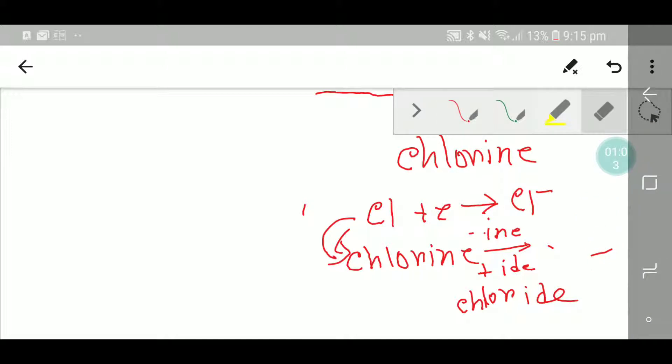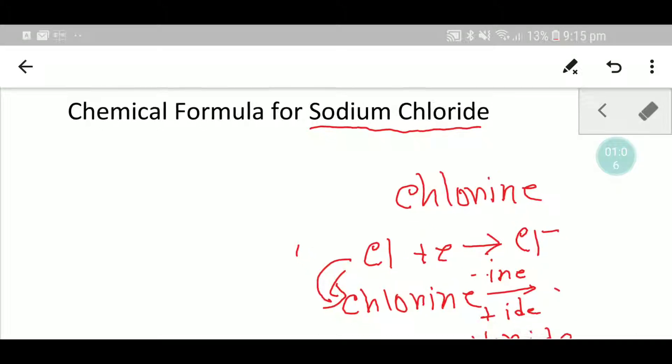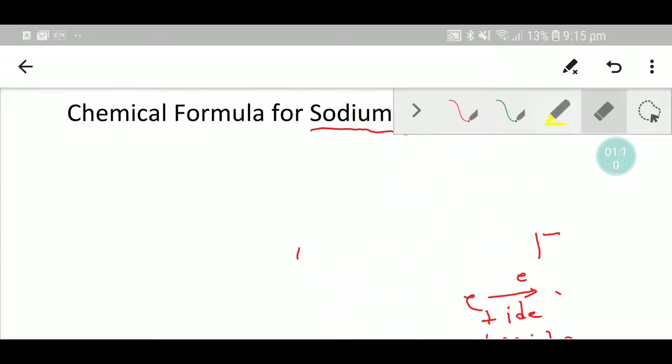I hope you have understood what I want to say to you. Let me now show you the formula for sodium chloride. This has two parts - one is chloride, so we know that this is the chloride ion.